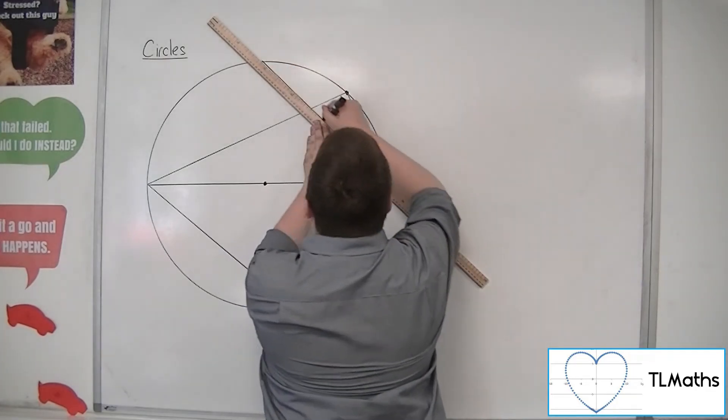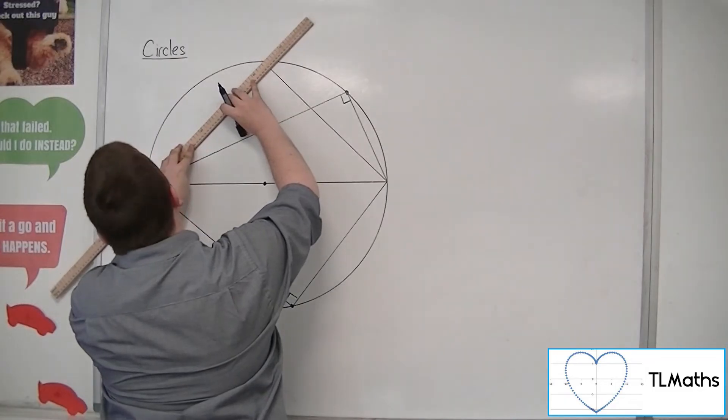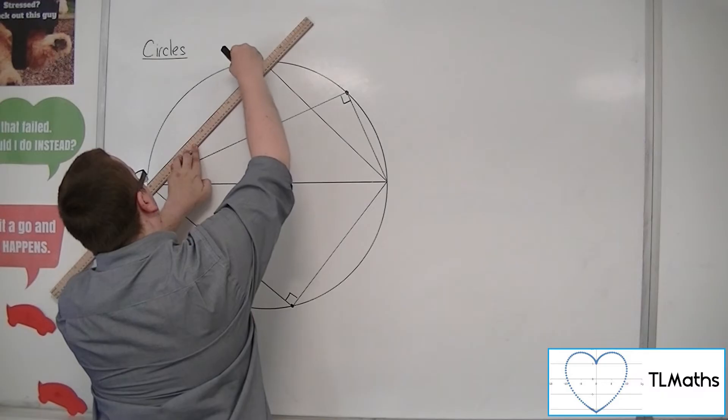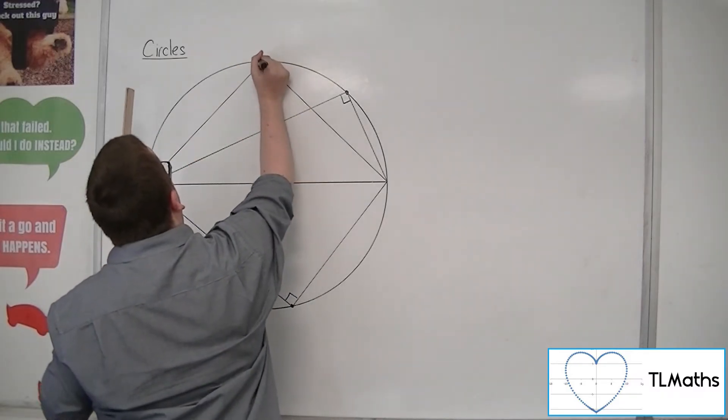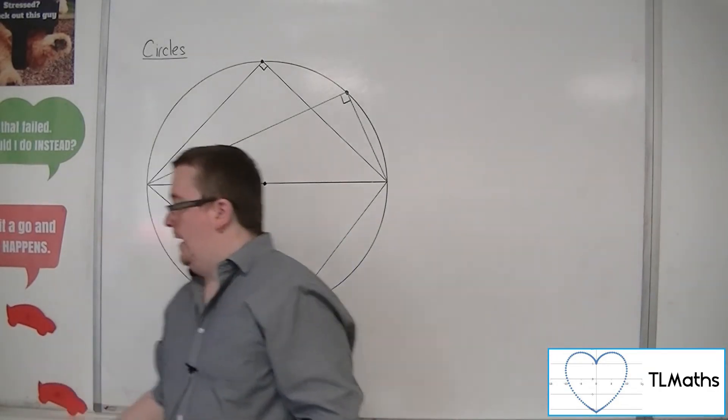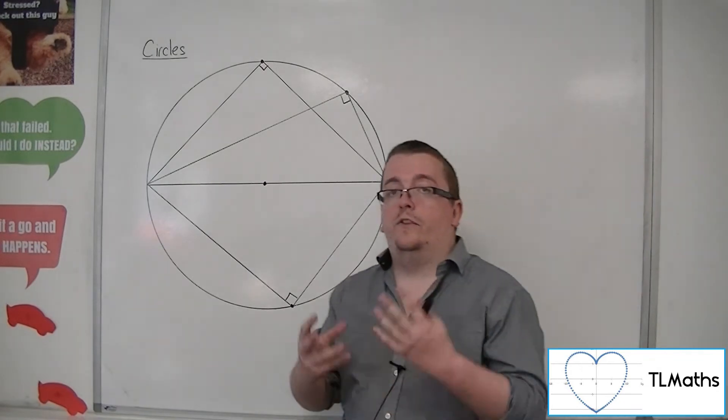Let's choose another point up there. So it doesn't matter what point I choose on the circumference, I will always get this 90 degree angle within the semicircle.